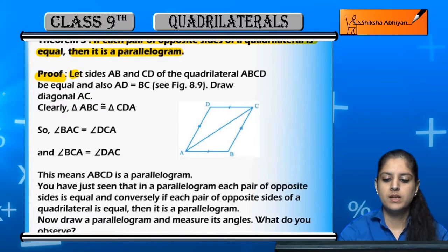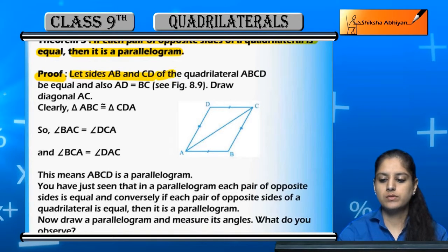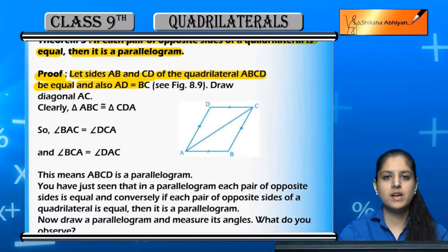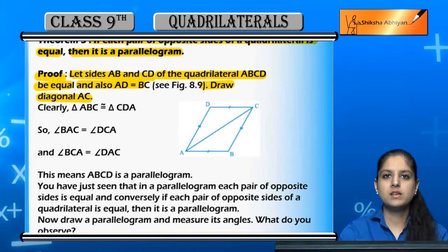Proof: Let sides AB and CD of the quadrilateral ABCD be equal, and also AD is equal to BC. Draw a diagonal AC.